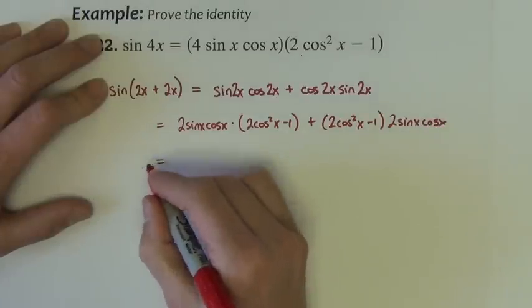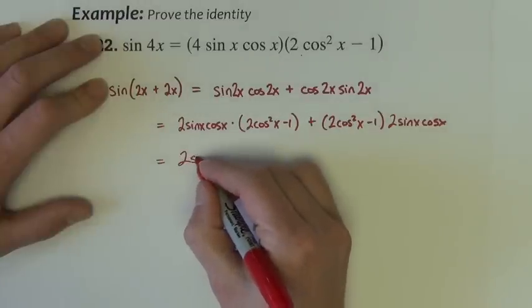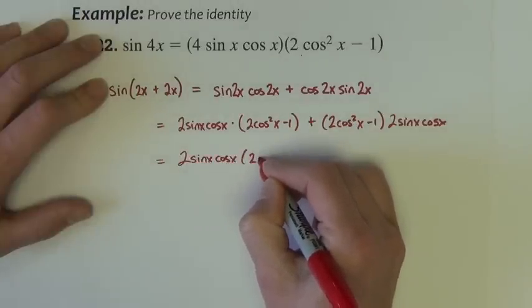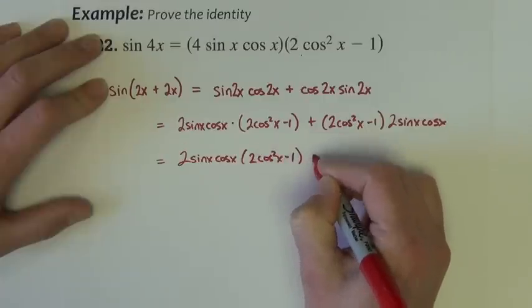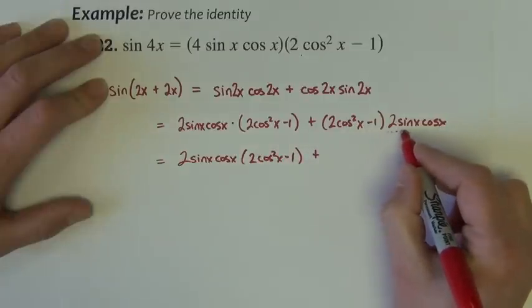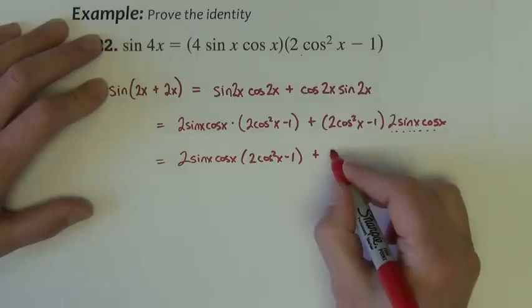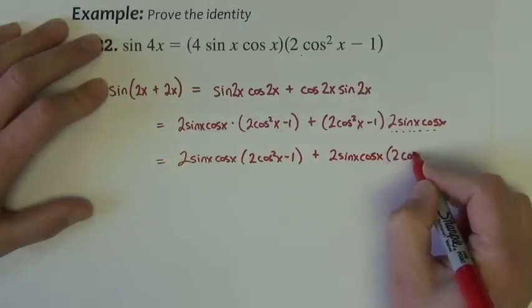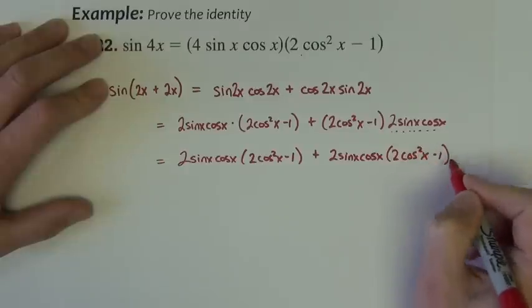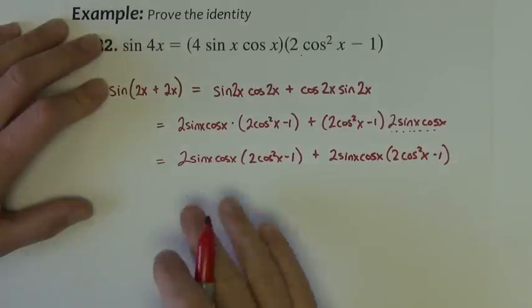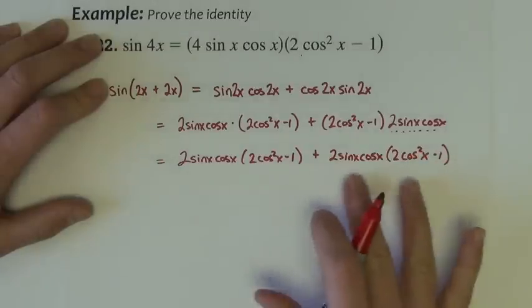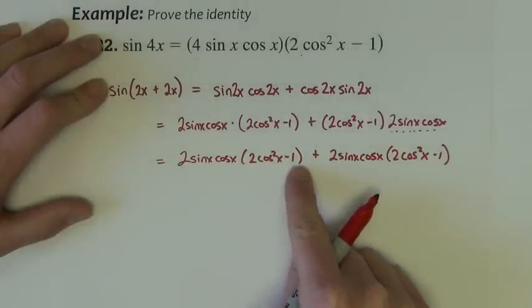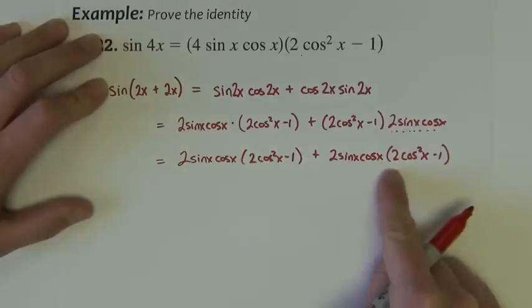Let me do just one step to rewrite so you can see exactly what I'm looking at. 2 sine x cosine x times 2 cosine squared x minus 1, plus I'm going to pull this 2 to the front of these two terms. Are they like terms? They are. They are both sine x cosine x times the quantity 2 cosine squared x minus 1.